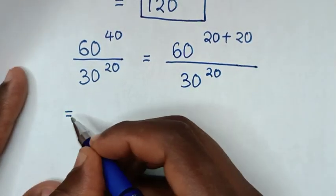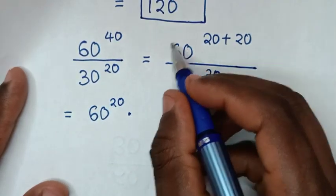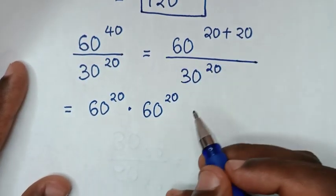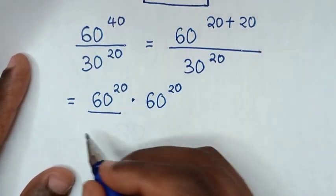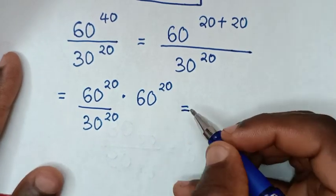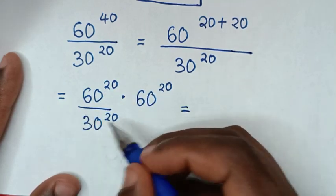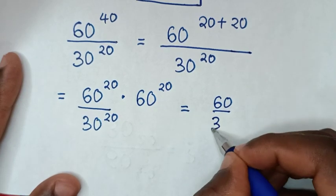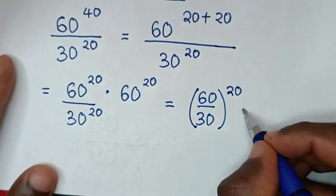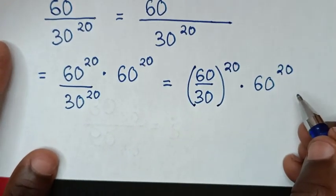Then in the next step it will be equal to 60 power of 20 times 60 power of 20, then we divide by one of them — which is 30 power of 20. Here we have division of exponents with the same power of 20, so it will be 60 over 30, bracket, same power of 20, times the exponent 60 power of 20.